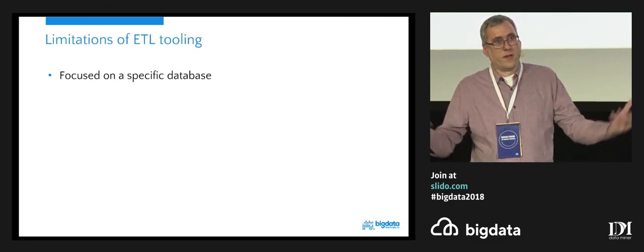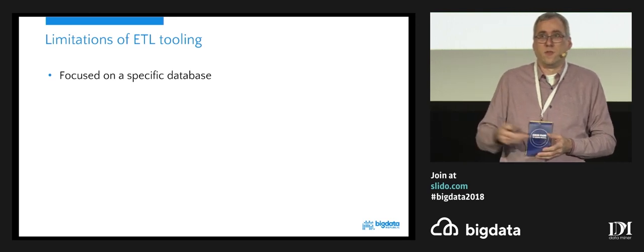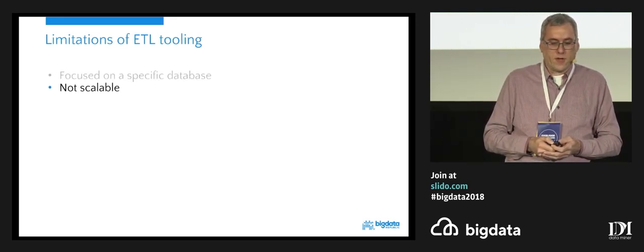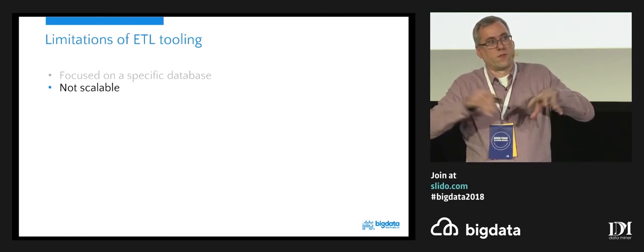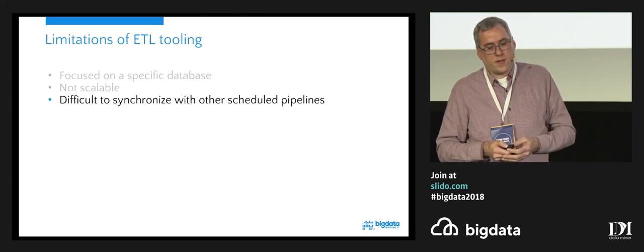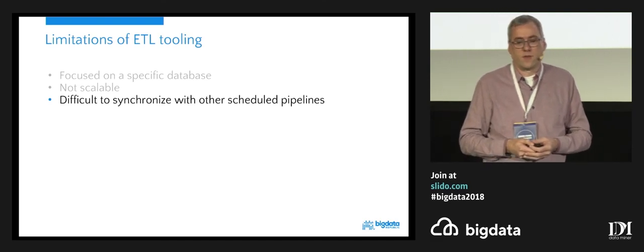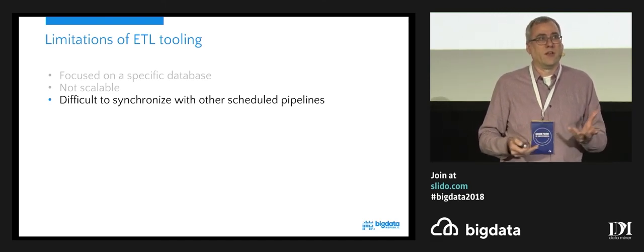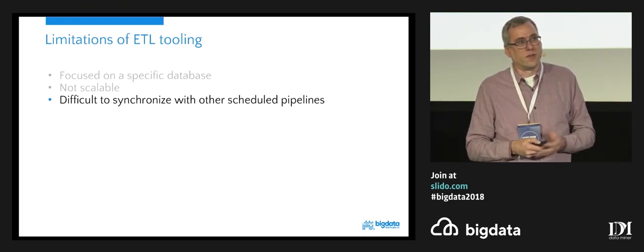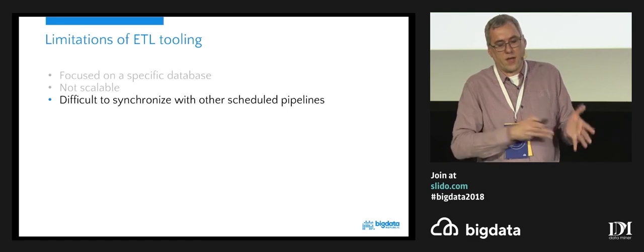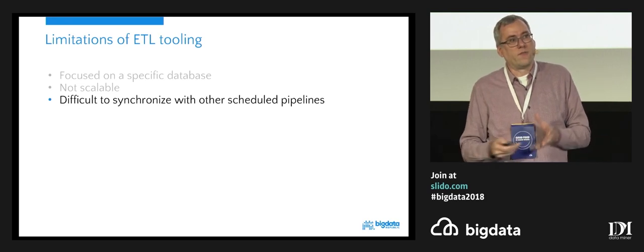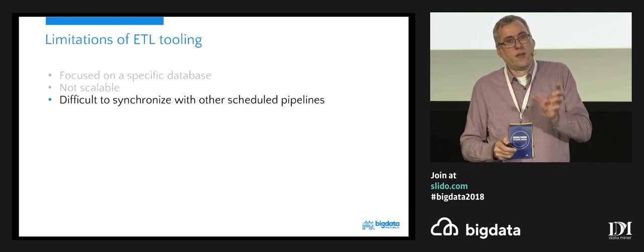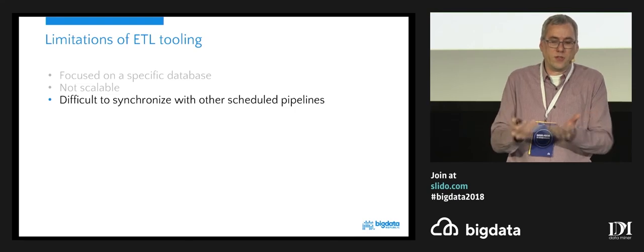Some of the tooling is not very easily scalable because it runs on one particular server, or you have a bunch of cron jobs in particular places. The biggest problem is that they are difficult to synchronize with other scheduled pipelines. If you imagine that you have your ETL pipeline in your new data warehouse and you want to run your pipelines through that, there will be cases where data comes in from a different system, and then you have the challenge of trying to synchronize operations and merging these data pipelines together.